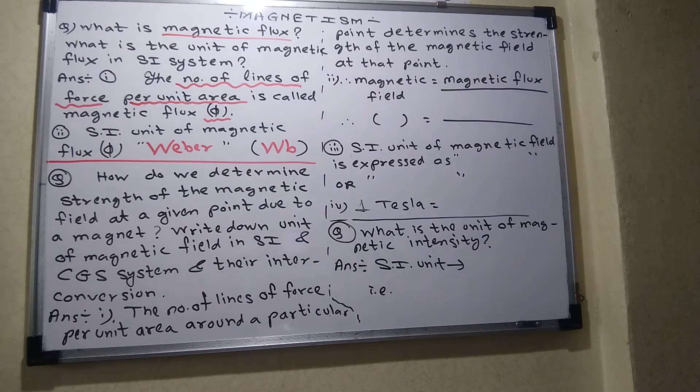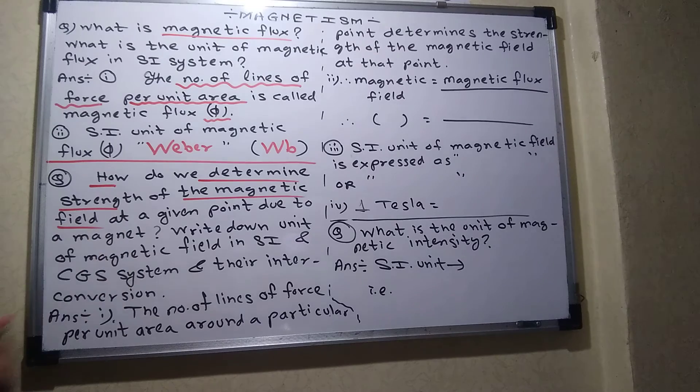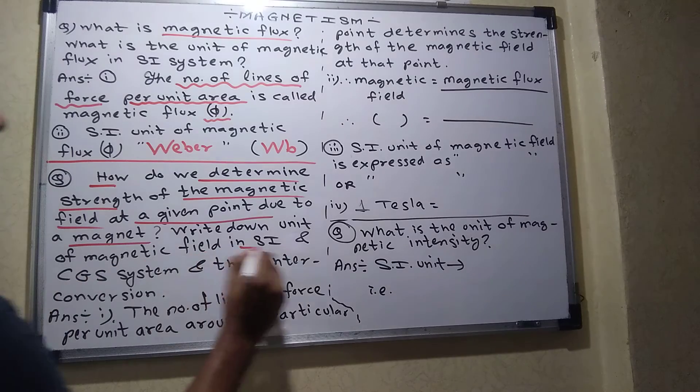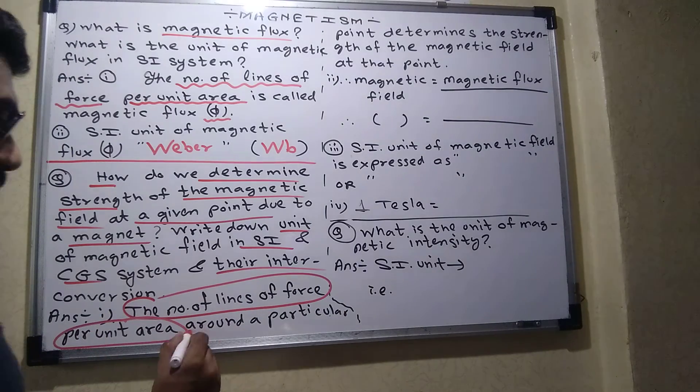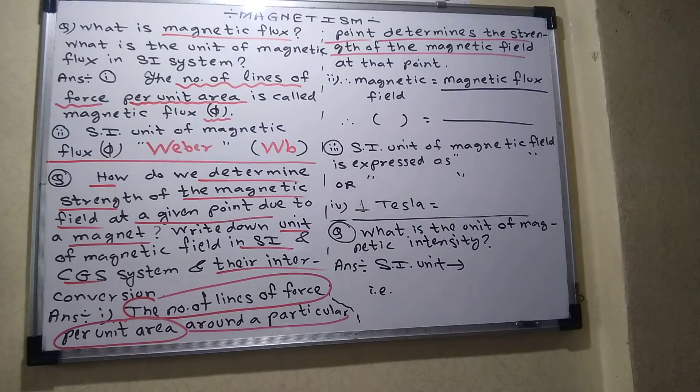So now you have to ask, sir, how we will decide magnetic field? Now we have to understand magnetic flux. How do we determine strength of magnetic field at a given point due to magnet? So students, how we will decide magnetic field? All of you concentrate. So this is number of lines of force per unit area around a particular point determines the strength of the magnetic field.